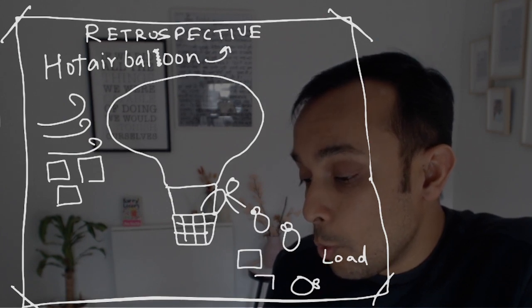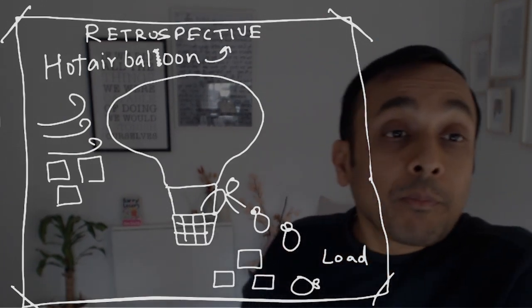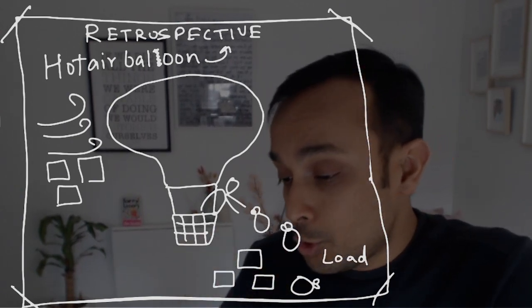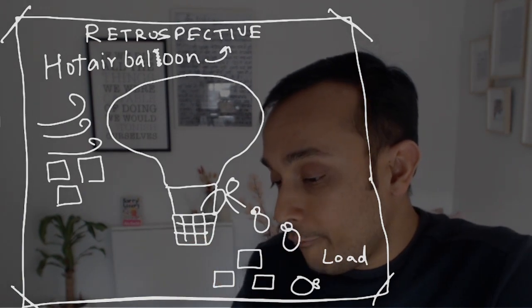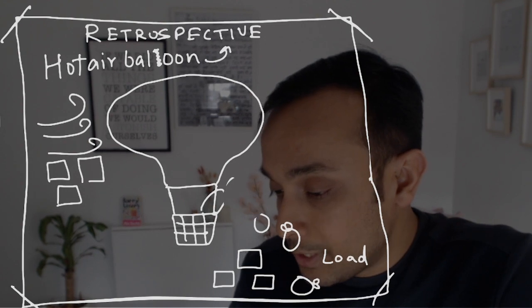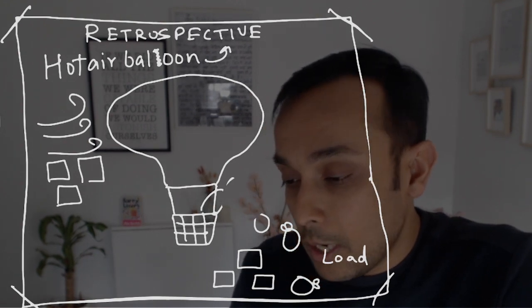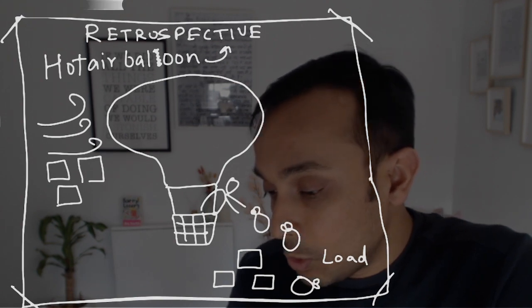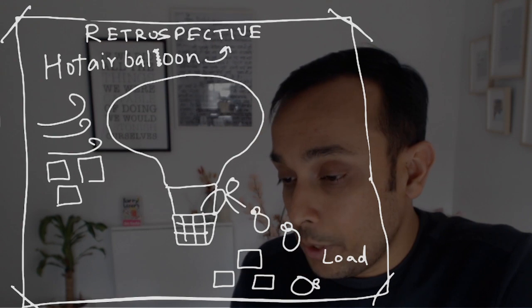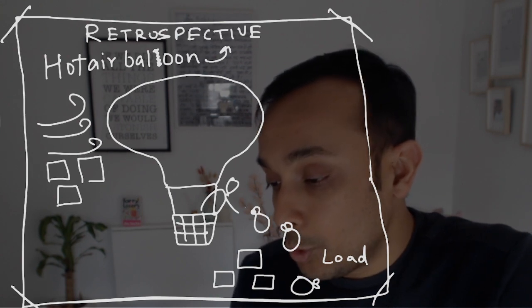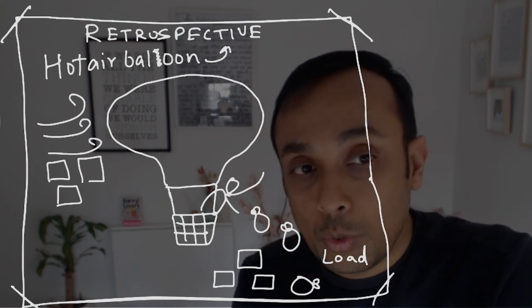Now you have to write what could be done better in the next retrospective. So what will you draw here? I'm thinking maybe I can use one of his hands. One hand is throwing things but another hand is giving ideas.